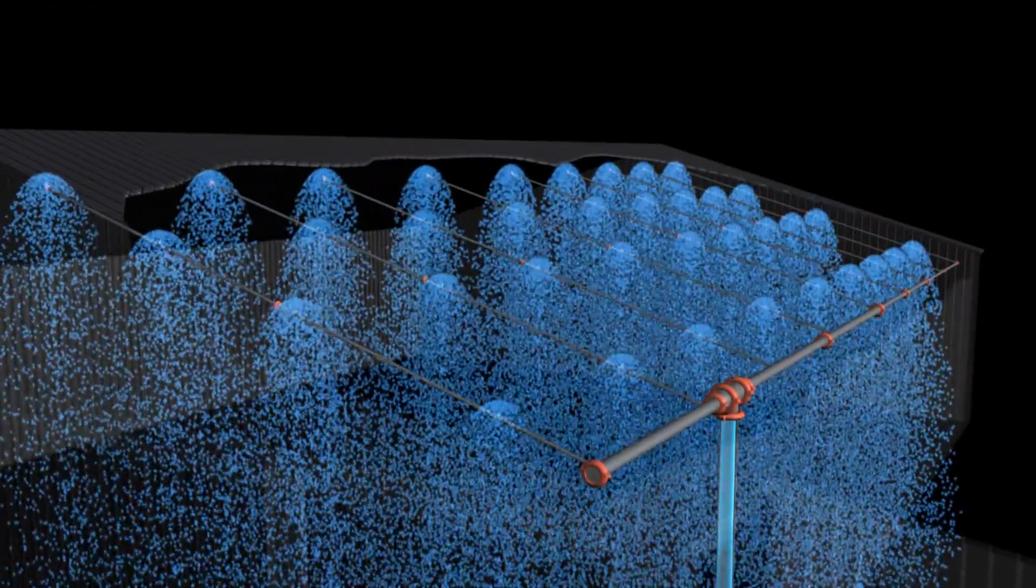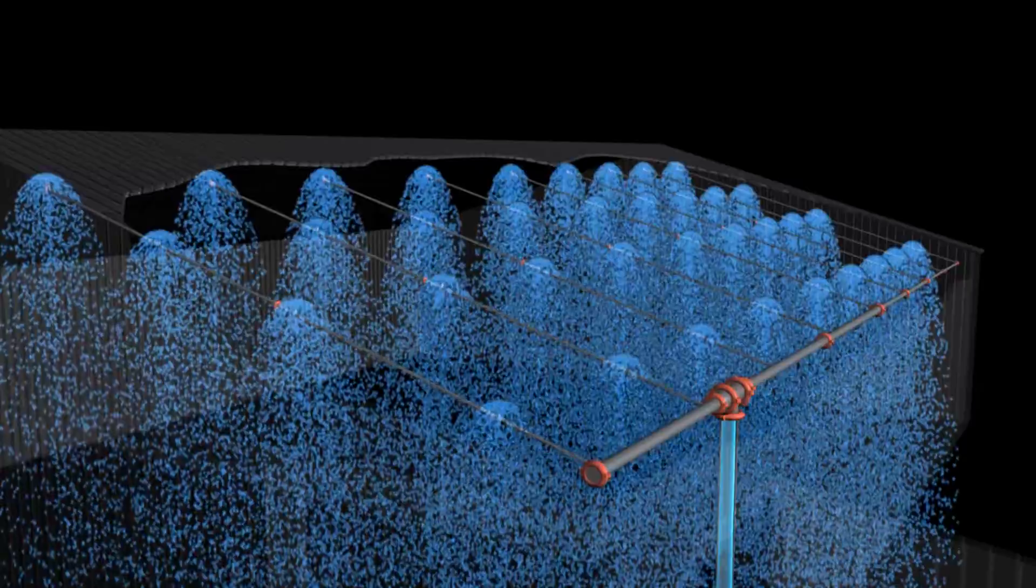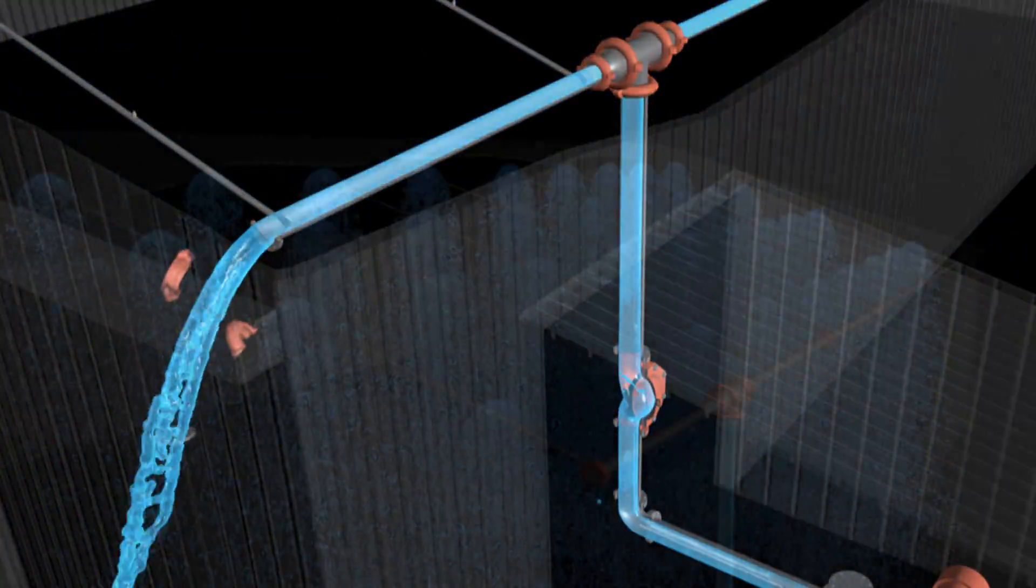The sudden opening of the deluge valve can create a surge condition that can cause a sprinkler head or fitting to fail.